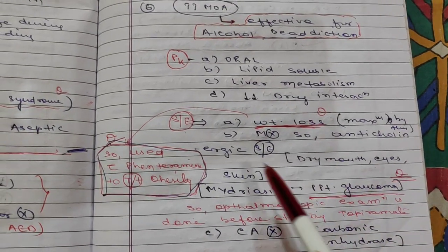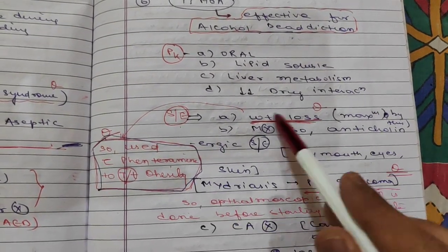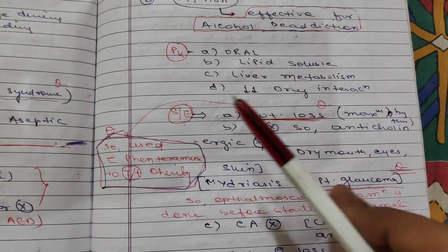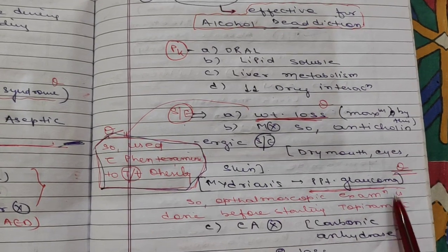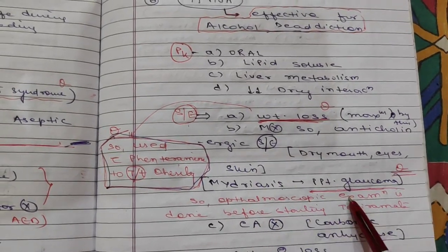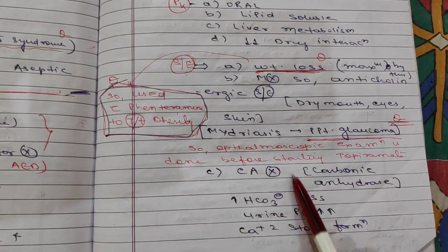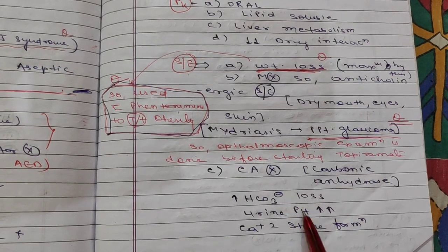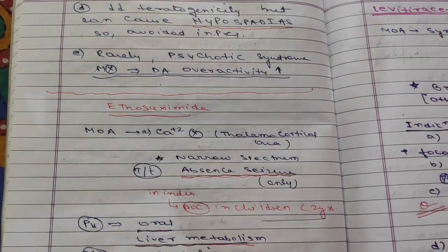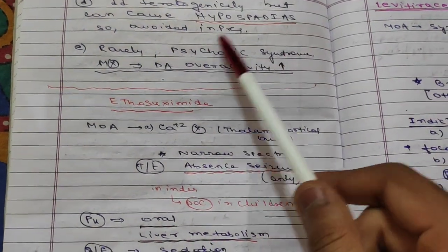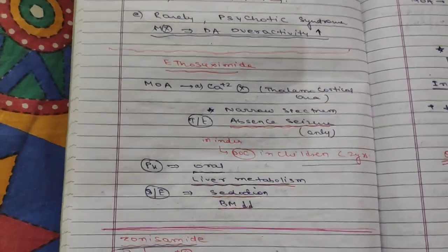Because of mydriasis from anticholinergic activity, topiramate can cause precipitation of glaucoma. Therefore, ophthalmoscopic examination must be done before starting topiramate and during its course — this is a very important MCQ question. Topiramate also has carbonic anhydrase inhibitor property, causing increased bicarbonate loss, increased urine pH, and increased calcium stone formation. It has less teratogenic potential but can cause hypospadias, so avoid in pregnancy. Rarely, it can cause psychotic syndrome.